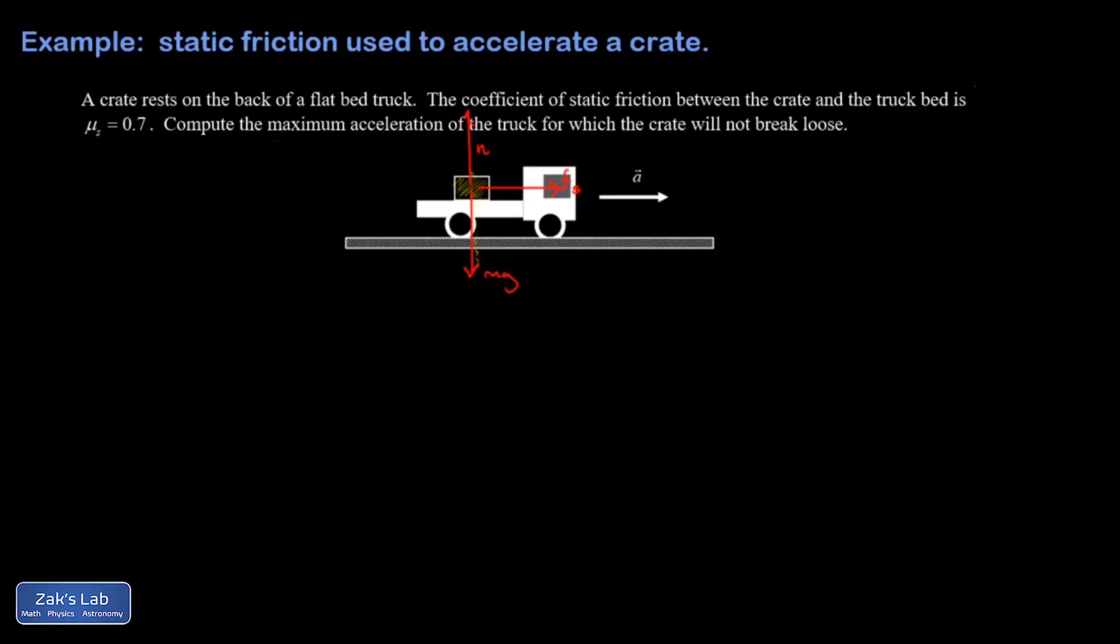And I want the maximum acceleration so that the crate won't break loose. So that means we are maxing out our static friction force, which means I can use the formula Fs equals mu s times n. That's the maximum static friction force.